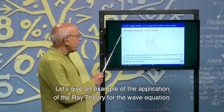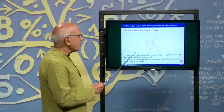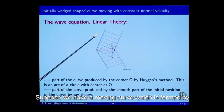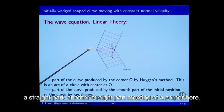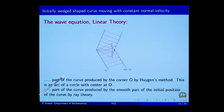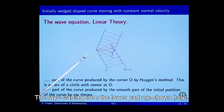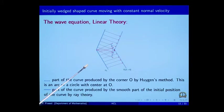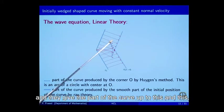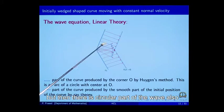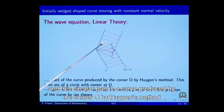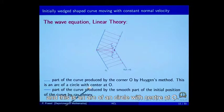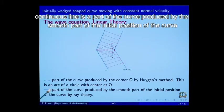Let us give an example of the application of ray theory for the wave equation. Suppose we have a moving curve formed by two straight parts meeting at a corner. The rays starting from the upper part and from the lower part are given by Fermat's principle and give parts of the curve. There is also a circular part of the wave, produced by the corner by Huygens' method — this is an arc of a circular curve. The blue continuous line is the curve produced by the smooth part of the initial position of the curve by the ray theory.